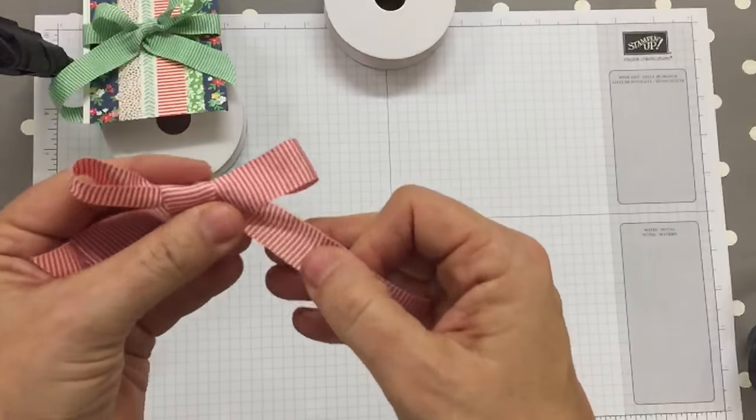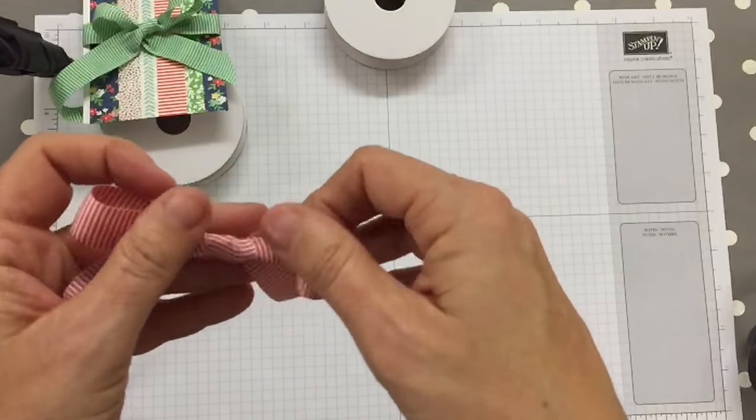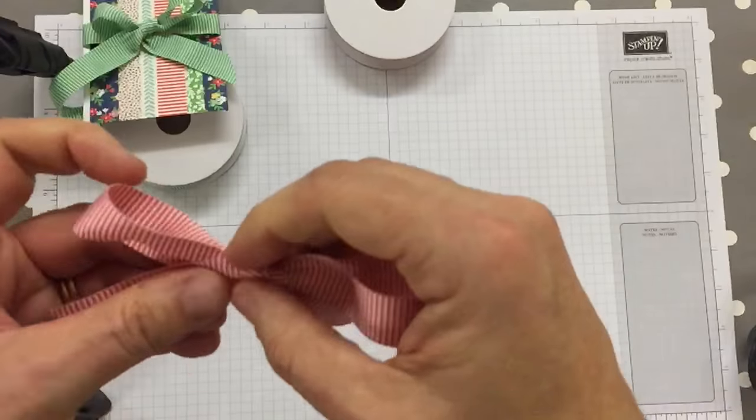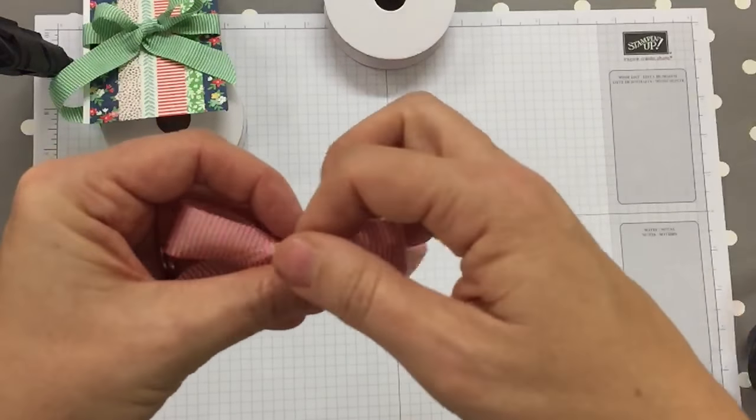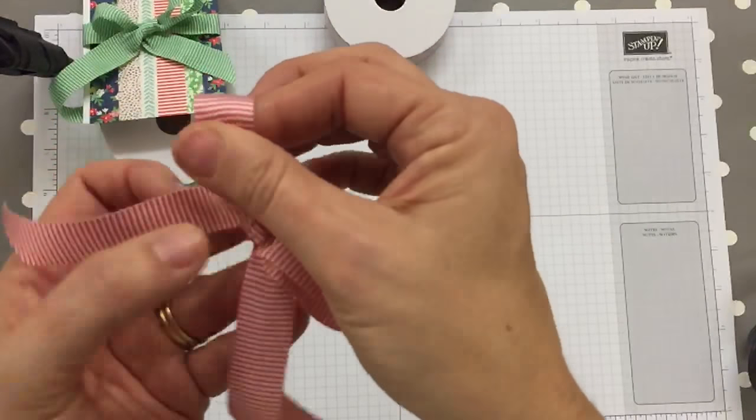And now we need to do our zhuzhing about a bit. Now it's a bit harder to do this because you've not got it tied around anything to pull against.